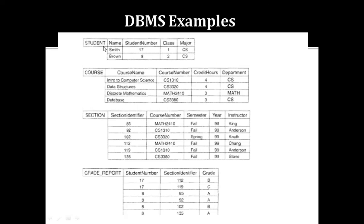For example, a student is one database system. In your class, 80 students are there. The whole class information is stored in a system. All information of 80 students is collected in one file, one format, one application, one system, on one machine. That collective interrelated data is stored in a student database. The student database contains student name, student number, student class, and the major — that is, the department.